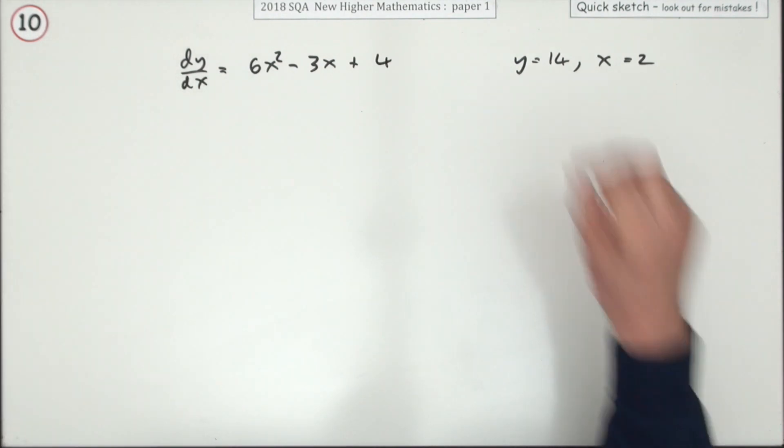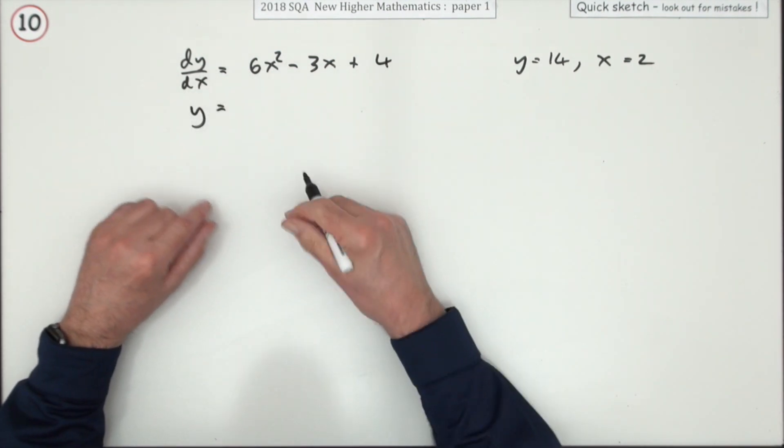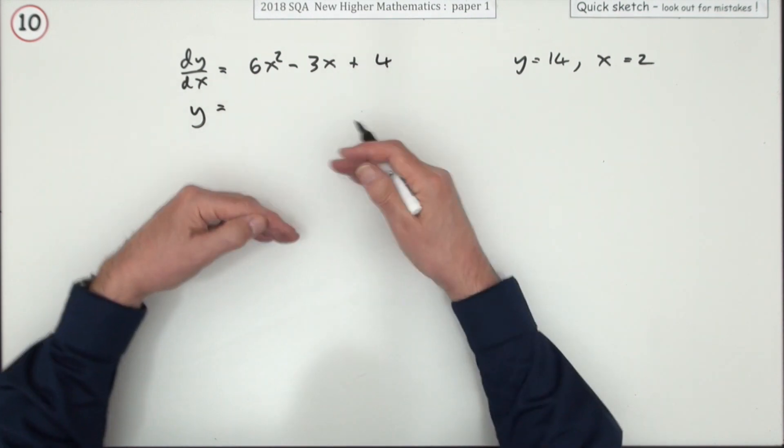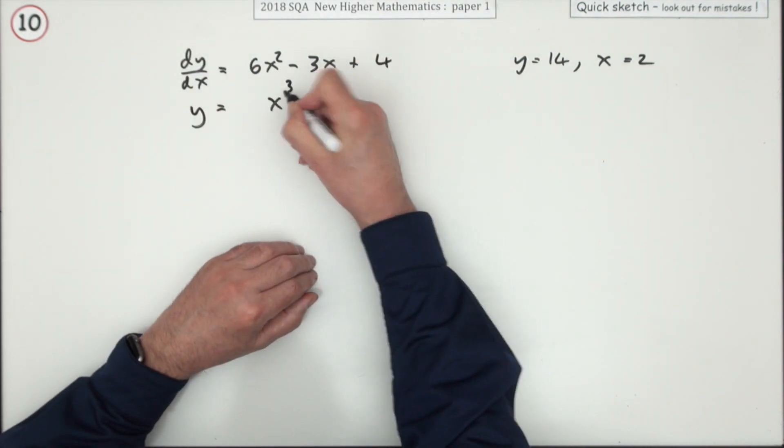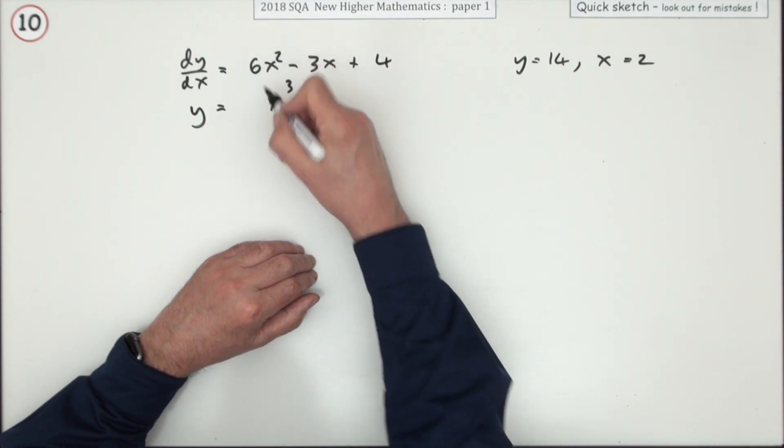You're going to be integrating it. You don't necessarily need to show the integral, you can just go through the process of integrating. So it's going to build back up to power three, divide by three. I'll just go straight in with, if I'm dividing by three, three into six will make two.